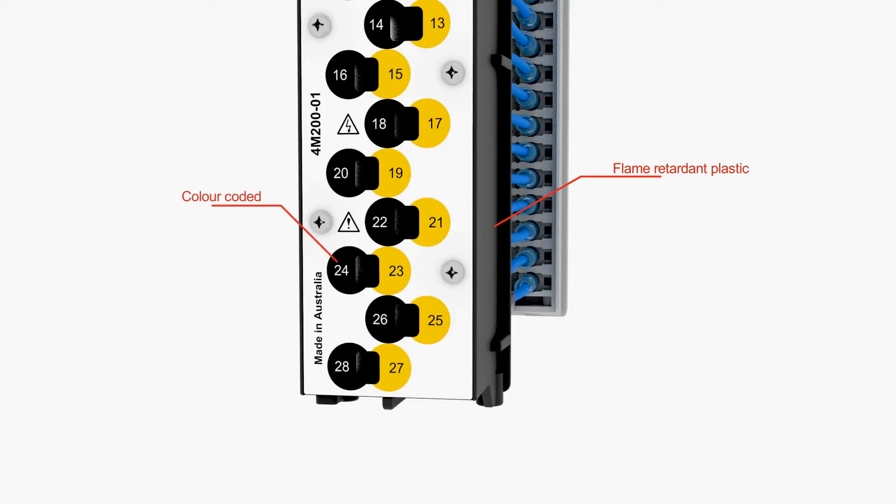The label is color-coded black and yellow to distinguish the equipment side from the live side. The 4M200 is proudly manufactured in Australia.